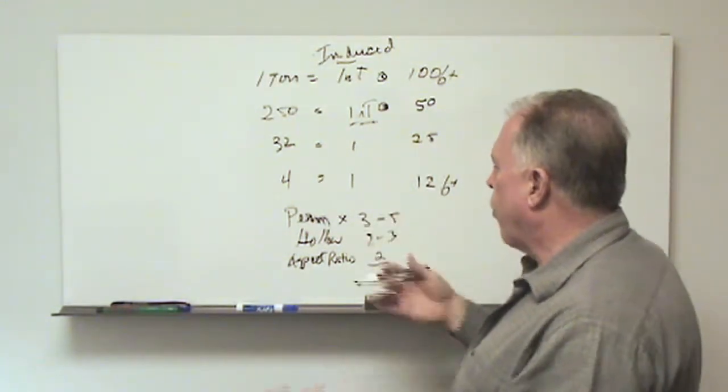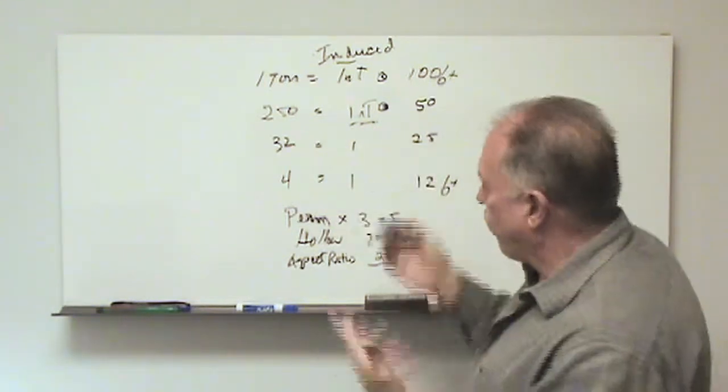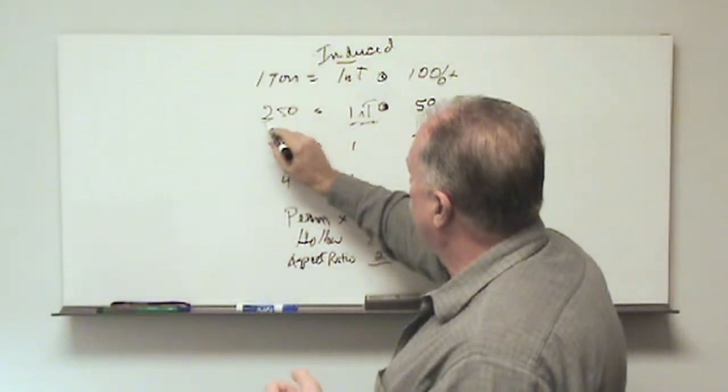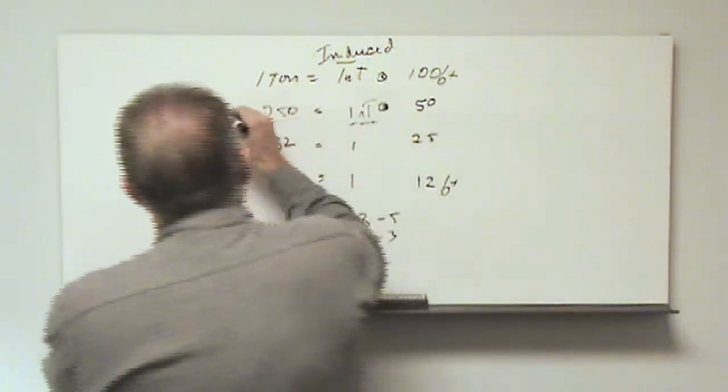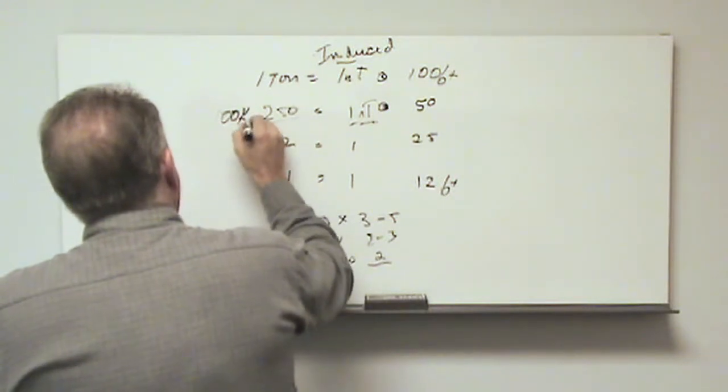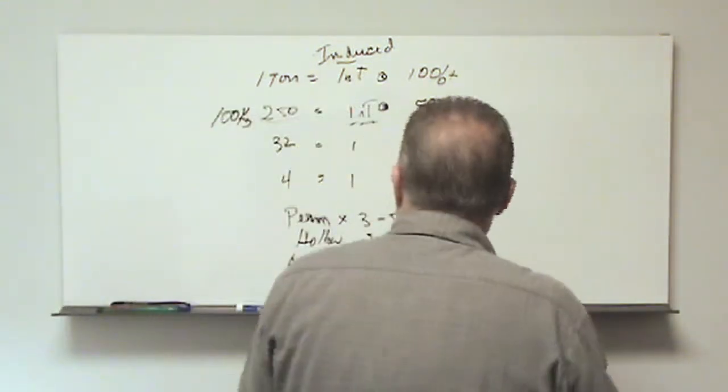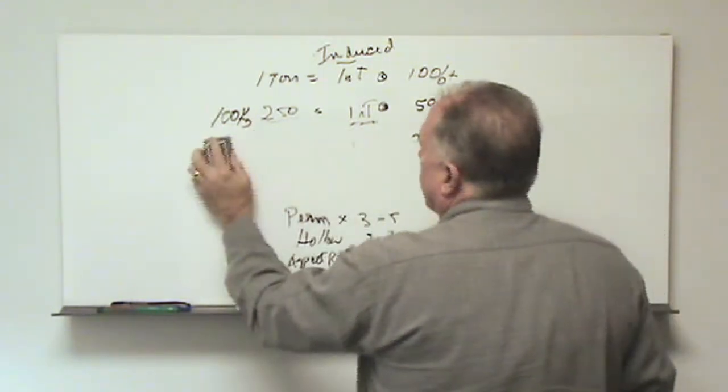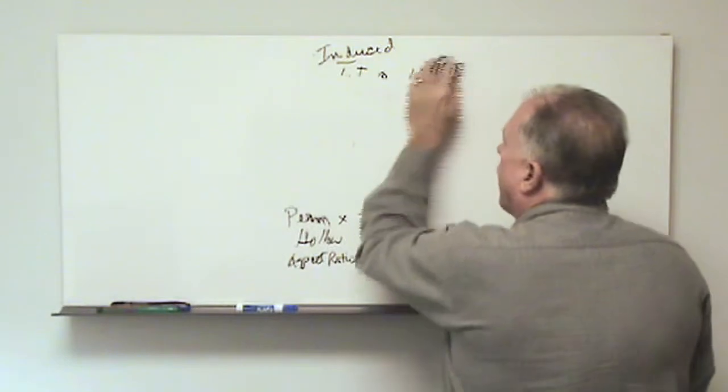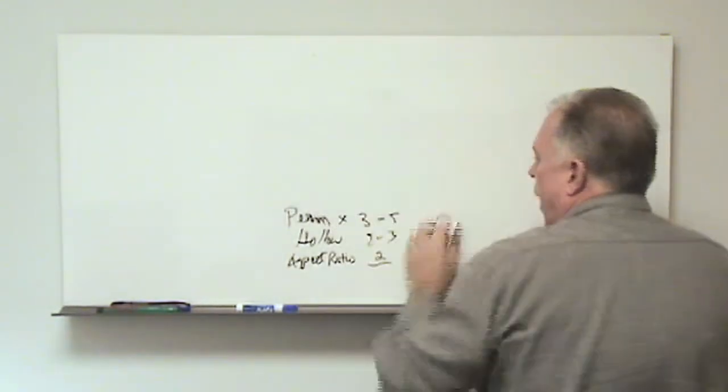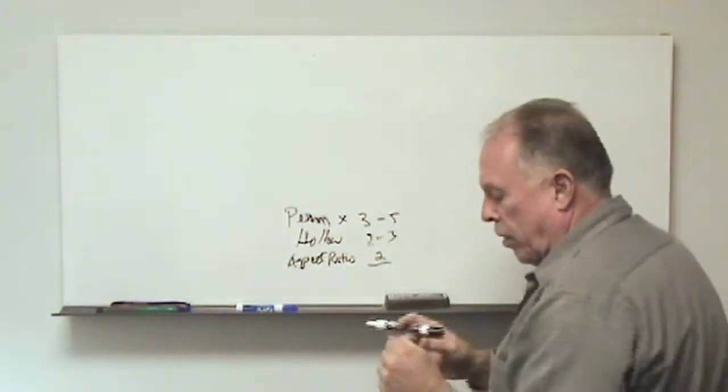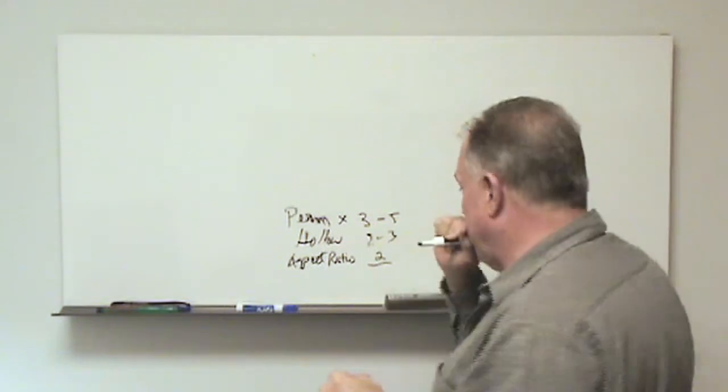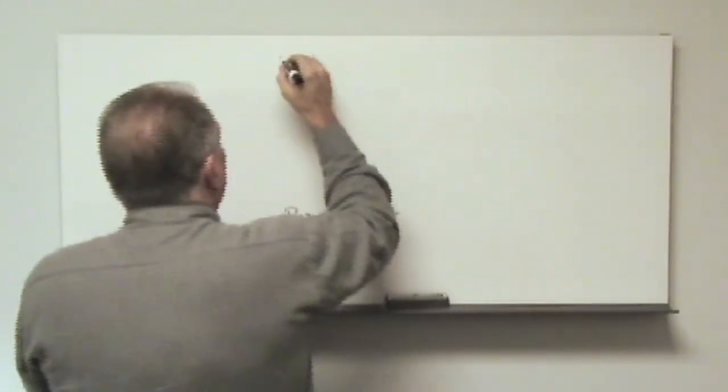So how this informs our survey is that let's say, for instance, and we'll just take an example here, that we want to be looking for 250 pounds or approximately 100 kg of ferrous material. And so now we'll sort of design a survey around that. And then we'll use these perm and hollow and aspect ratio numbers to give us an idea of what kind of anomalies we might expect from that 250 pounds. So we'll put this back up. 250 pounds equals one nanotesla at 50 feet.